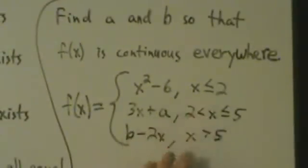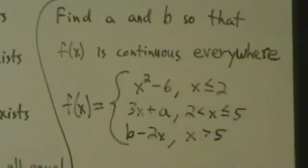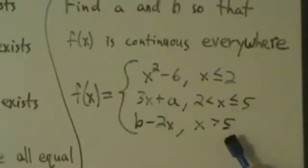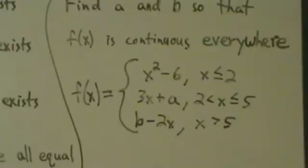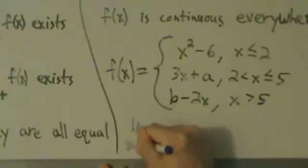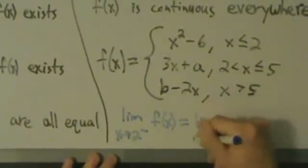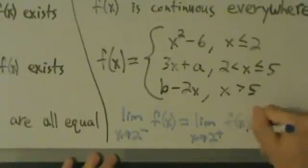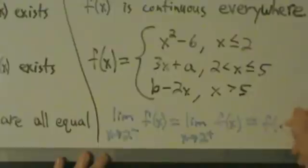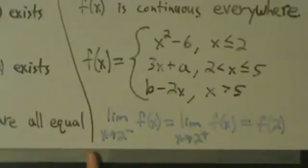Using this definition, we want to guarantee that the left-hand limit at 2, the right-hand limit at 2, and the actual function value at 2 are all the same thing — and the same condition at x equals 5. So what we need is: the limit as x approaches 2 from the left of f of x equals the limit as x approaches 2 from the right of f of x, and both equal f of 2.